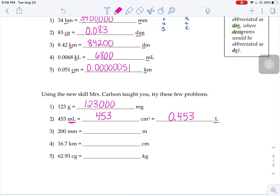Those 200 millimeters are the same thing as 0.2 meters. Be careful, not 0.200. We want to keep sig figs the same. This guy would be 1,670,000 centimeters. And this last one, 0.0006293 kilograms.